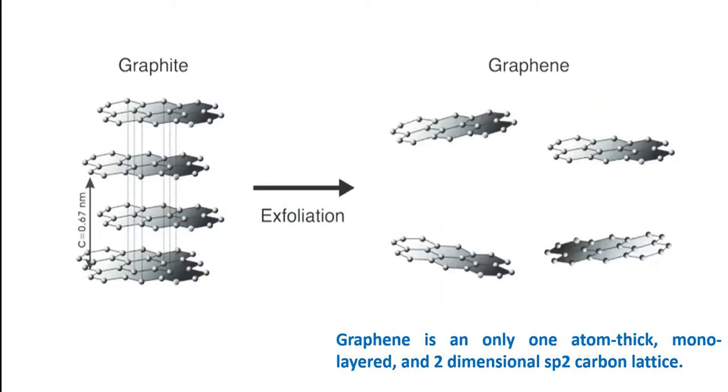First of all, what is the difference between graphite and graphene? Graphene is only one atom thick, monolayer, two-dimensional sp2 carbon lattice. When you have a graphite rod, by exfoliation you get a few layers of carbon which is called graphene.